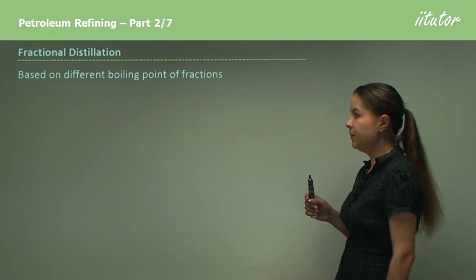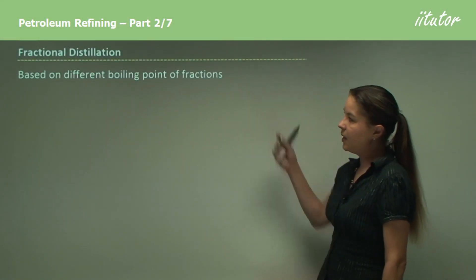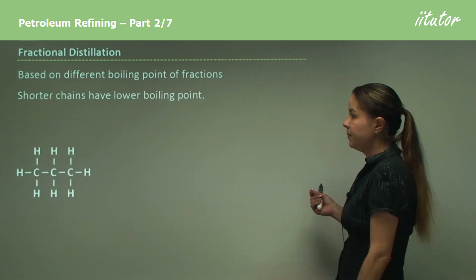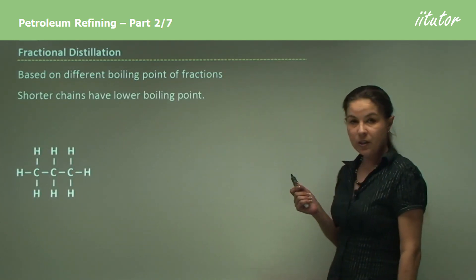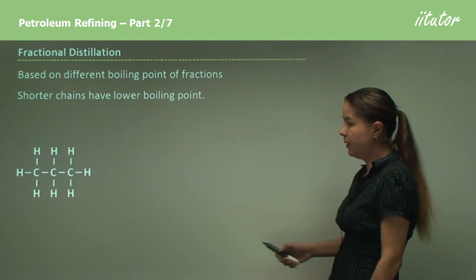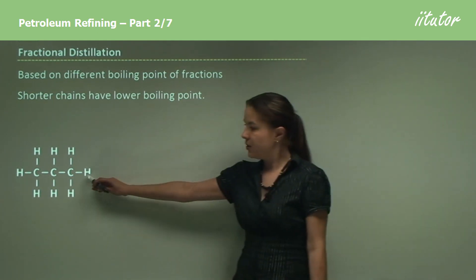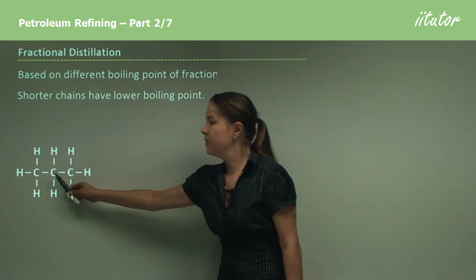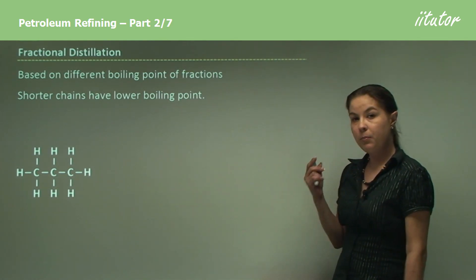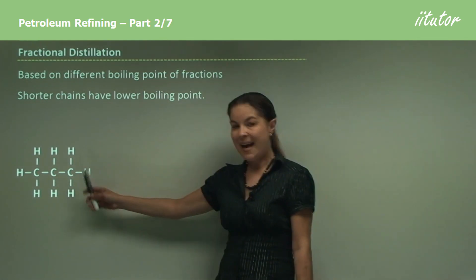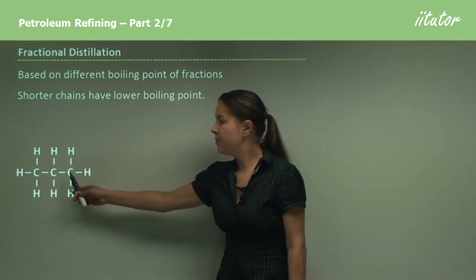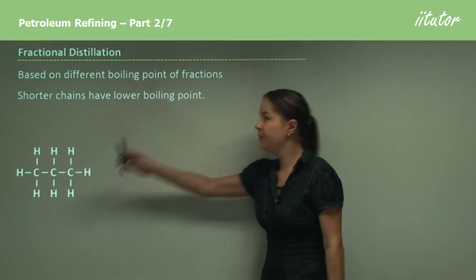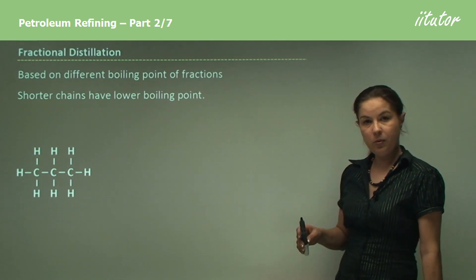Looking at fractional distillation, it's based on different boiling points of the fractions, where shorter chains will have a lower boiling point, such as this chain here. This is propane, so it has three carbons, so the prefix is prop, and it's an alkane, which means it only has single bonds. So this is propane, and it has a lower boiling point.